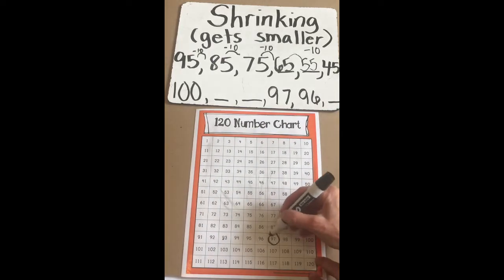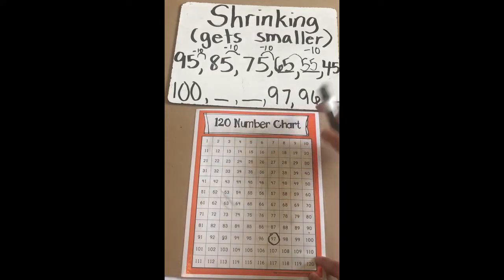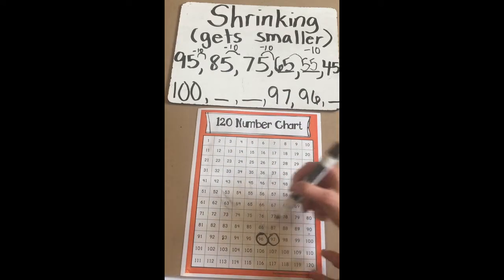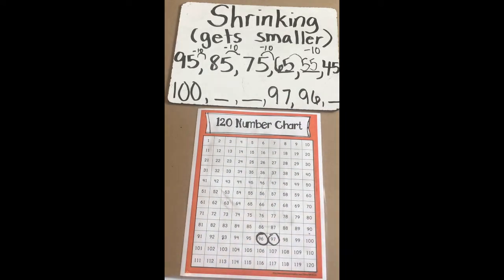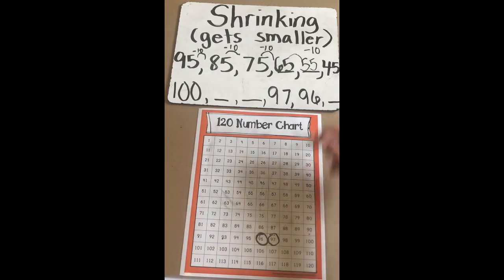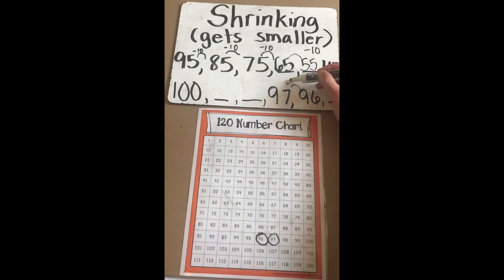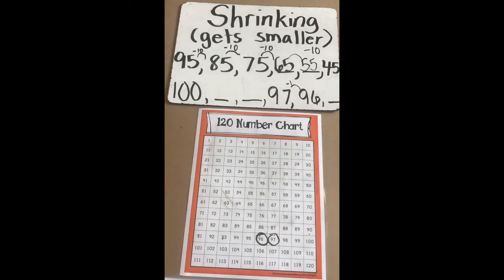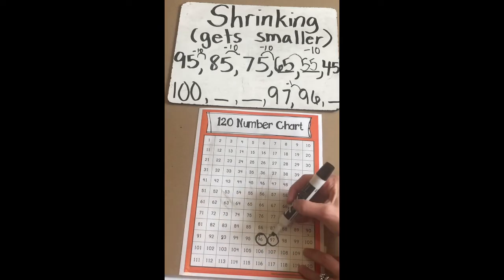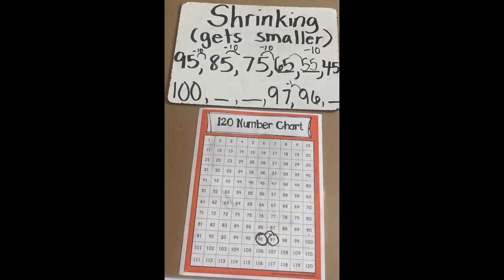Let's look at 97 and 96. Again, it's getting less — the numbers are going backwards and getting fewer or smaller, so it is a shrinking pattern. I notice that those two numbers are right next to each other, and 96 is just one less than 97. So the rule from these two numbers is that the pattern is taking away one each time.